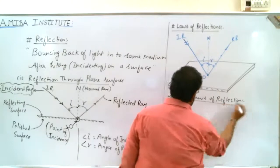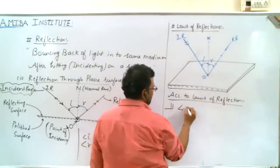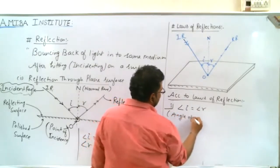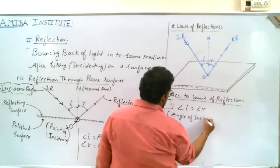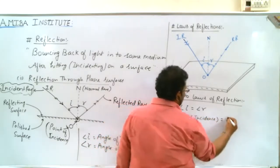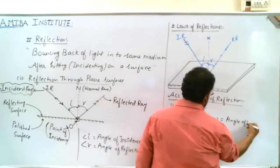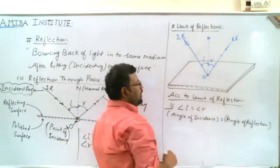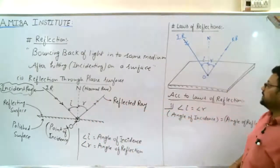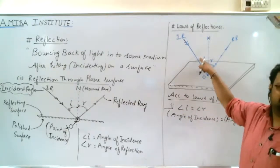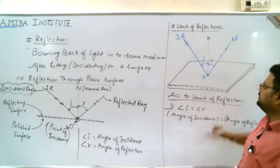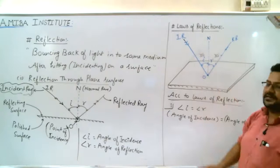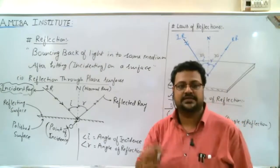According to laws of reflection, the first law states that angle i is equal to angle r. The angle of incidence is always equal to the angle of reflection. This is the first law.